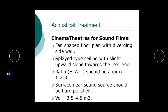Next one is the cinema theatre. For sound films, various shapes of floor plan give good acoustic conditions, but a fan-shaped plan is the best one. The ceiling of the auditorium should be splayed type with a slight upward slope towards the rear side. The ratio between height, width and length should be approximately 1 to 2 to 3, because the capacity of persons in the cinema hall may vary between 800 to 1000. The height to width to length ratio is taken as 1 to 2 to 3. The volume of a sound film theatre should be between 3.5 to 4.5 meter cube per seat.